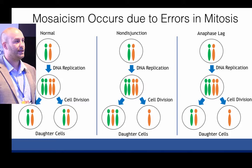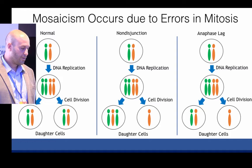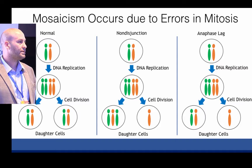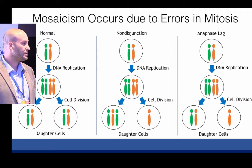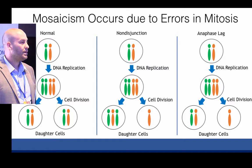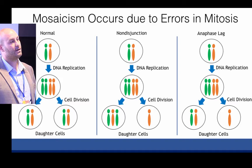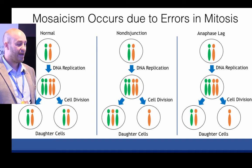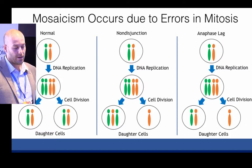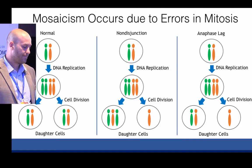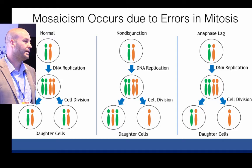So how does mosaicism originate? Mosaicism originates due to an error in mitosis. Normally you undergo DNA replication and cell division and you get two daughter cells that have the same chromosomal complement. You can have nondisjunction, one form of error that leads to mosaicism, where during cell division one of the chromosomes does not segregate evenly, and you end up with a daughter cell that has a trisomy and a daughter cell that has a monosomy. Additionally, you can have anaphase lag, where one chromosome lags behind and is eventually lost during cell division, resulting in a daughter cell with monosomy and a daughter cell with a euploid chromosome complement.